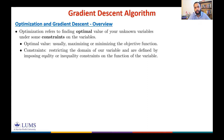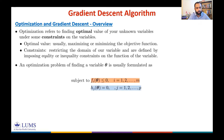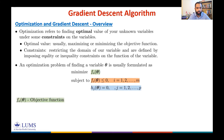In general, we can formulate an optimization problem as: minimize a function f₀(θ), referred to as an objective function. For example, in our least squares problem, this could be the squared norm of the error that we want to minimize.